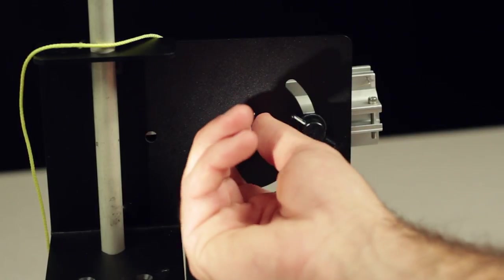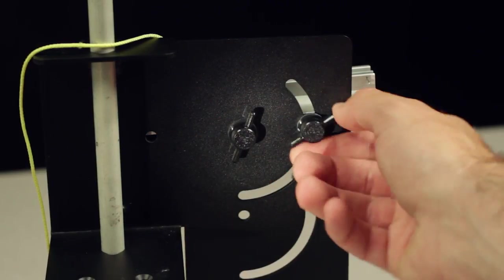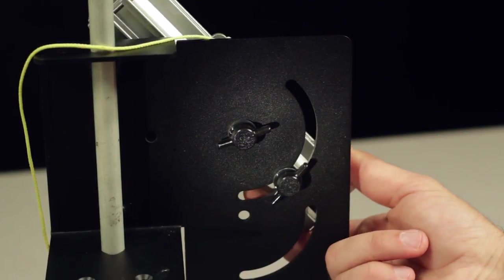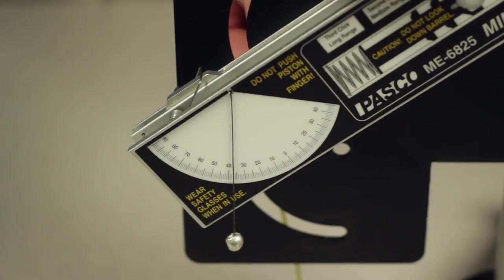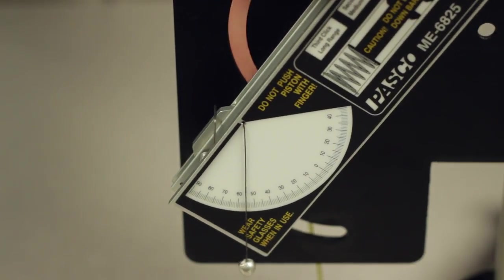The launcher angle is easily adjusted using the thumb screws on the Mini Launcher base, and the built-in protractor and plumb bob on the side of the launcher give a convenient and accurate way of determining the angle of inclination.